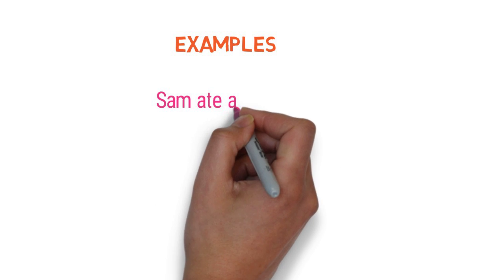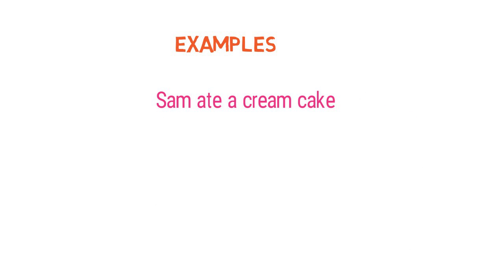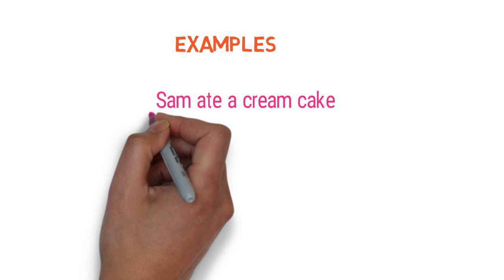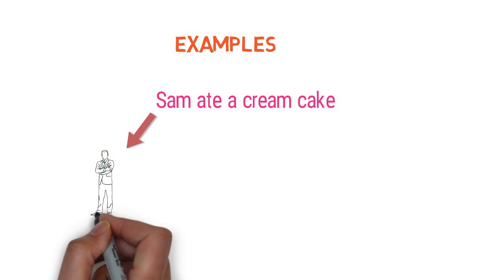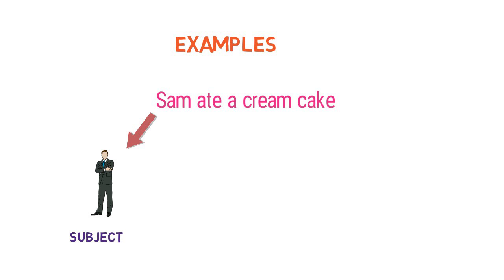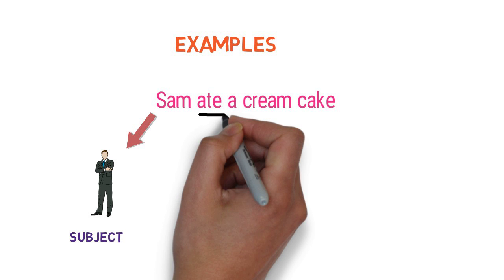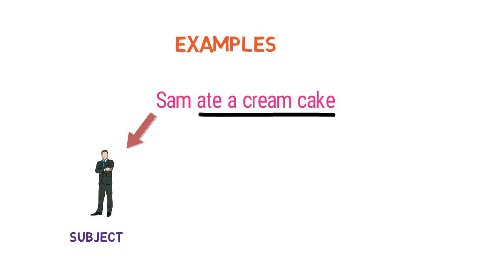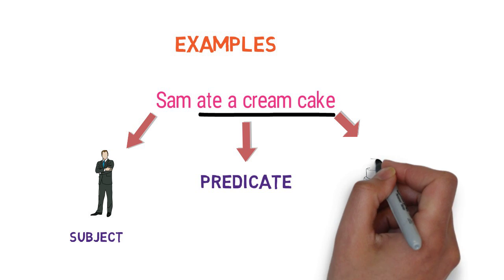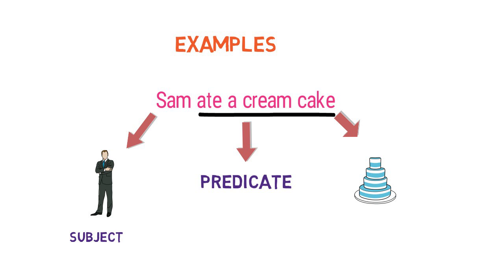Sam ate a cream cake. Here, who is the sentence about? It is about Sam. So Sam is the subject here. And what did Sam do? Sam ate the cream cake. So ate the cream cake is the predicate. And what did Sam eat? It is a cake. So cake is the object here.